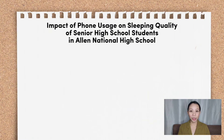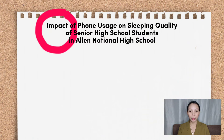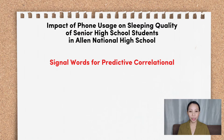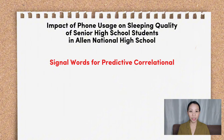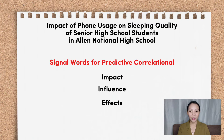In this research title, the signal word used is 'Impact.' I want you to remember these signal words for predictive correlational studies: Impact, Influence, and Effects. If any of these words appear in the research title, the research design to be employed is predictive correlational.